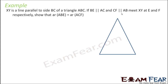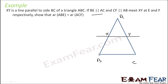If XY is a line parallel to side BC of the triangle ABC, and BE is parallel to AC, and CF is parallel to AB.